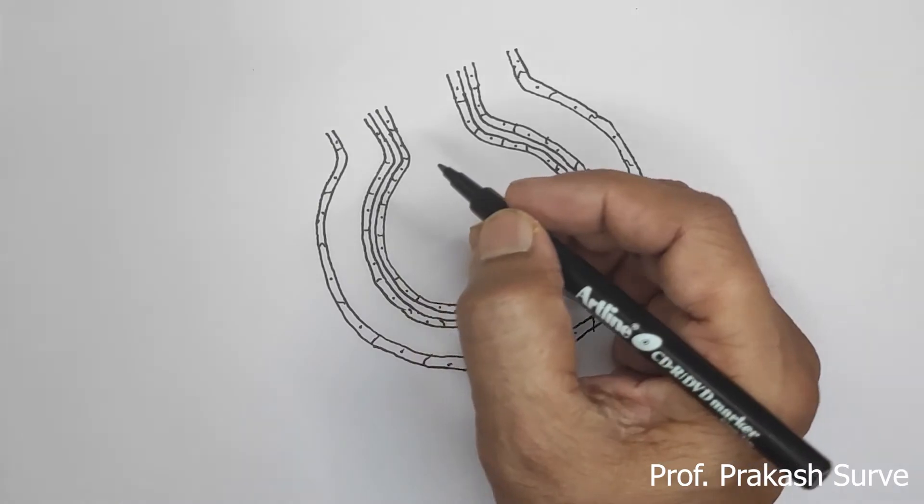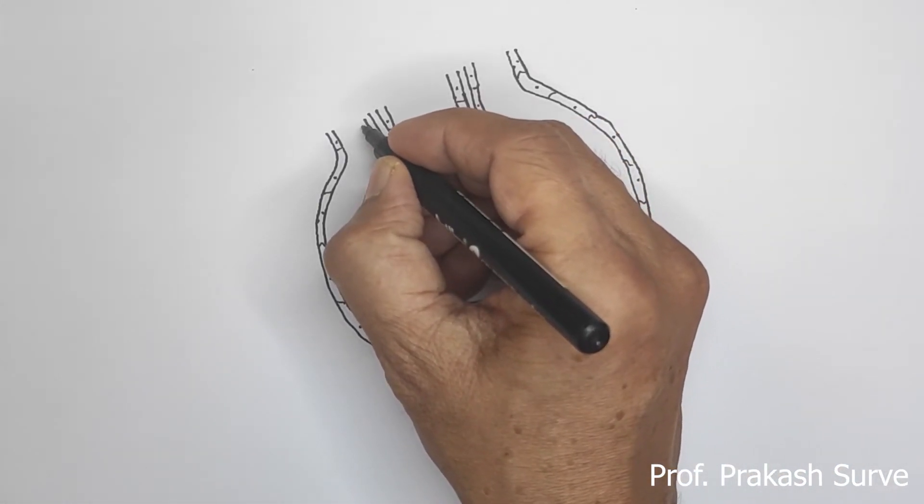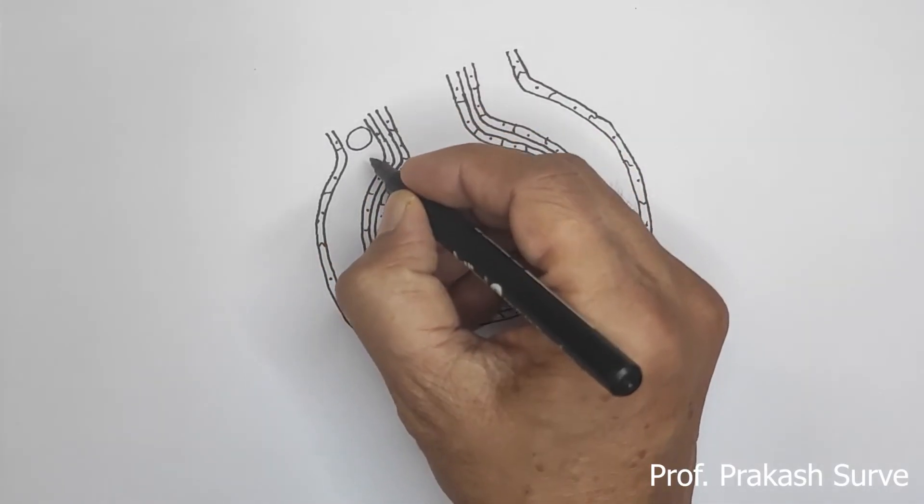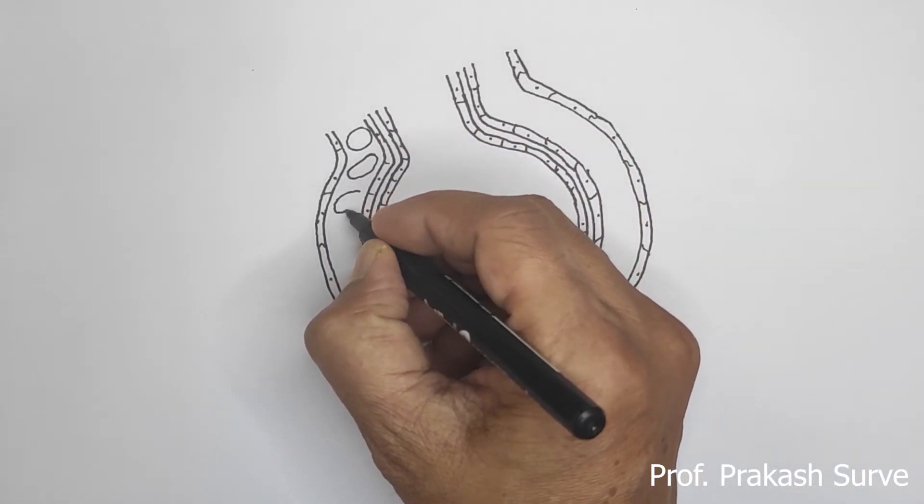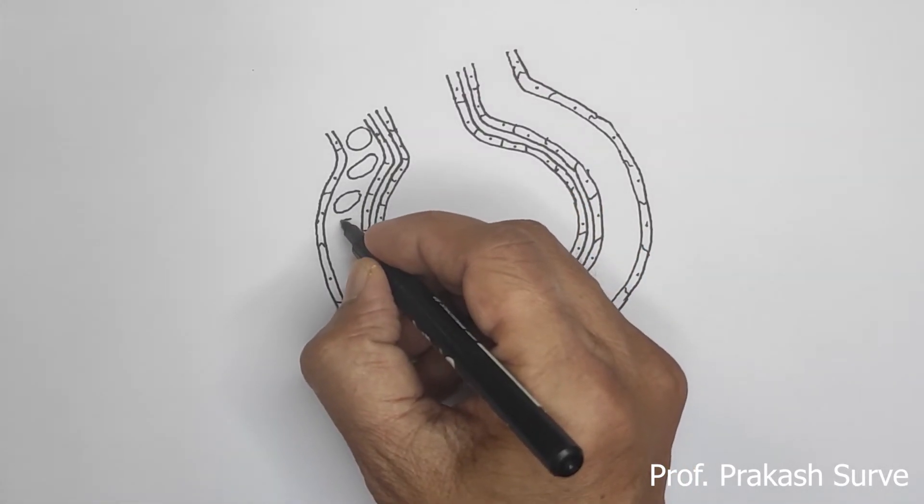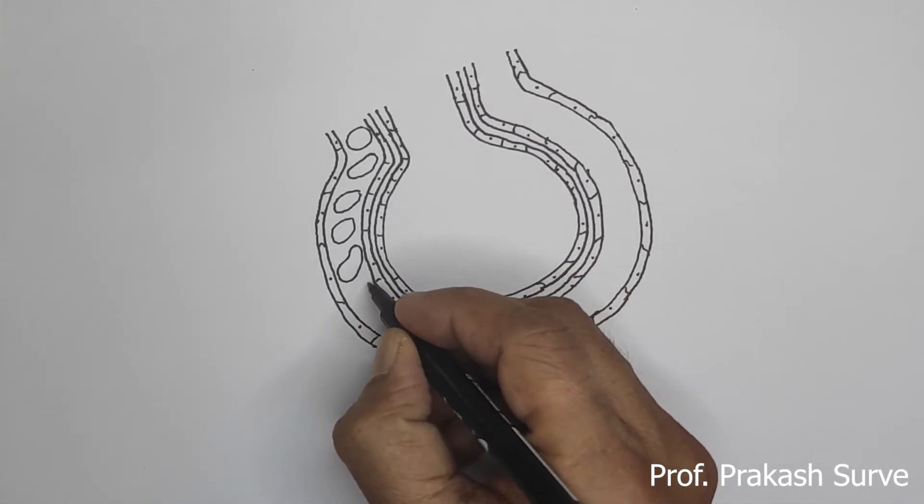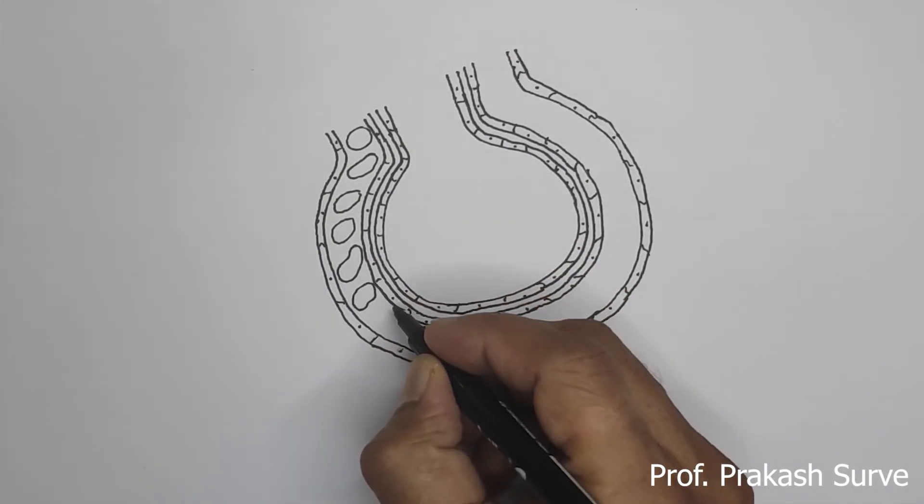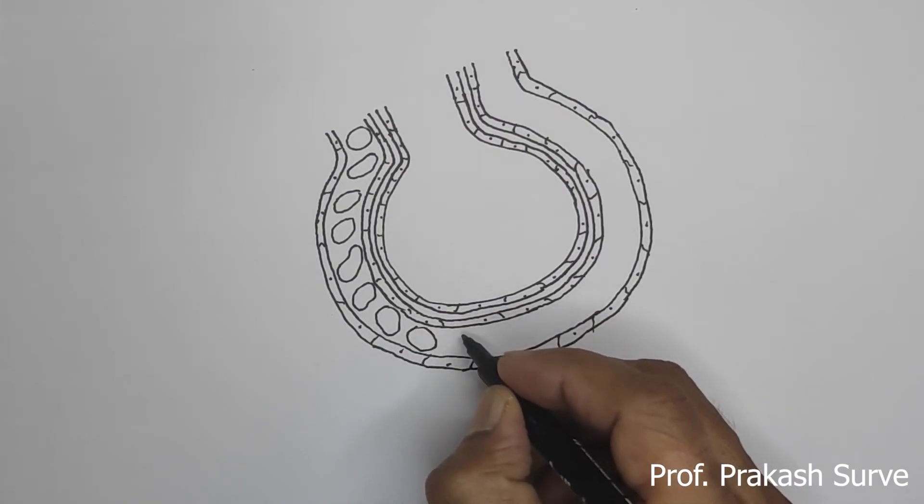Now inside that, we'll draw the blood cells. Spherical as well as some shapes which are a little bit irregular shape, as it moves in the capillary. Sometimes the shape may get changed.